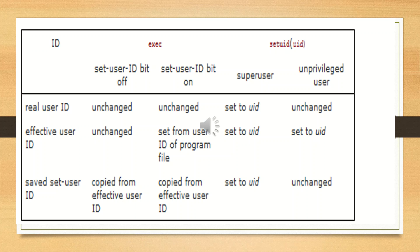If the process does not have super user privilege but the UID equals either the real user ID or the saved user ID, setuid sets only the effective user ID to UID — the real user ID and the saved user ID are not changed. If neither of these two conditions is true, the error number is set to EPERM and an error is returned.